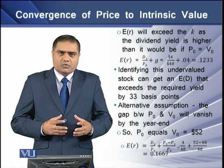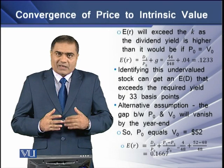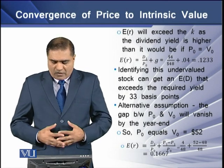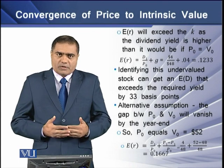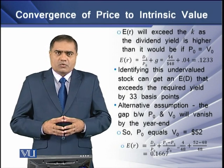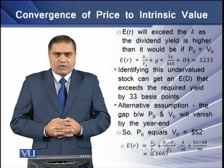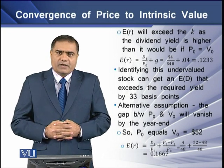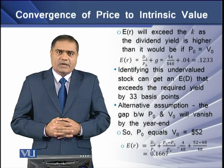There is an alternative assumption: the gap between p0 and v0 will vanish by year end, so p0 will equal v0, which means it will equal 52 dollars in our example. The expected return equals the dividend yield plus the capital gain yield: d1 over p0 plus (p1 minus p0) over p0. That gives us 4 divided by 48, plus 52 minus 48 divided by 48. Summing these two yields gives an expected rate of return of 16.67 percent.